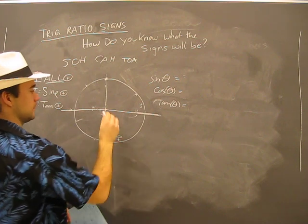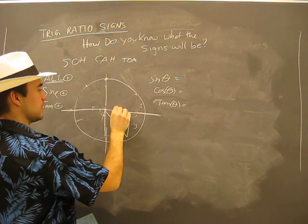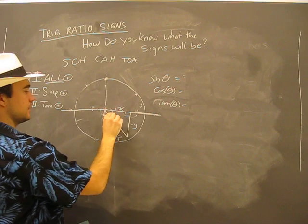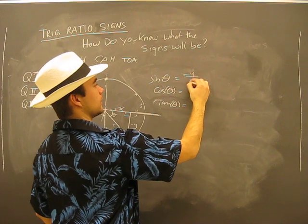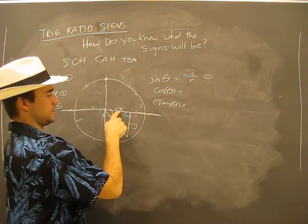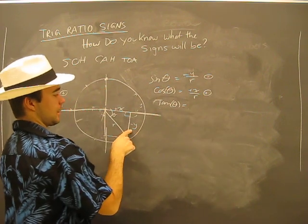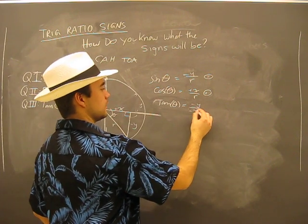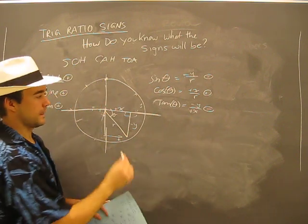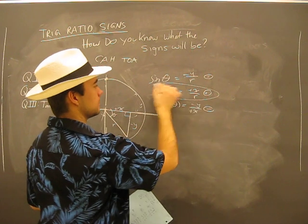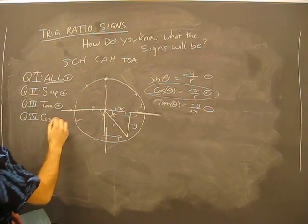Now quadrant four — we're going down so it's negative y, but we're going positive x distance. Sine is negative y over r — that's negative. Cosine is adjacent over r, so positive x over r — that's positive. And tan is opposite over adjacent, so that's negative. So for an angle in quadrant four, the only ratio that's going to be positive is cosine.